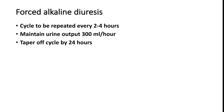When treating with forced alkaline diuresis, cycles can be repeated every two to four hours depending on clinical improvement. Maintain a urine output of around 300 ml per hour. Taper the cycle over 24 hours — at minimum, one cycle can be given every four hours, so the forced alkaline diuresis can be continued over 24 hours.